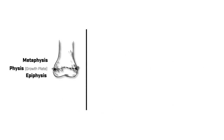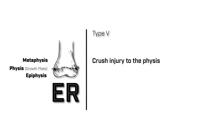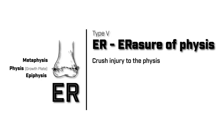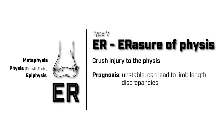Lastly, we have a type 5 Salter-Harris fracture, which is a crush injury to the growth plate. You'll remember this type of fracture by the letters E and R in our mnemonic, because you could think of this crush injury as an erasure of a growth plate. These fractures are often unstable and can lead to leg length discrepancies, and like type 4 Salter-Harris fractures, operative management should be considered.